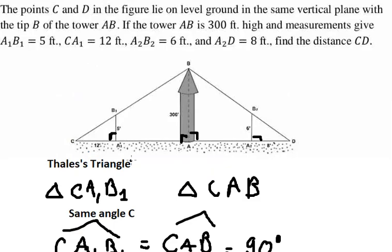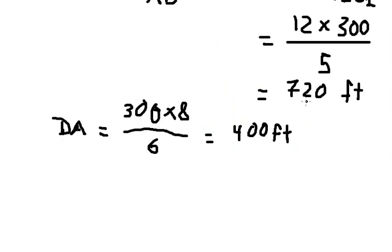The question asks us to find CD. We add the two numbers together and get the final answer: 1120 feet.